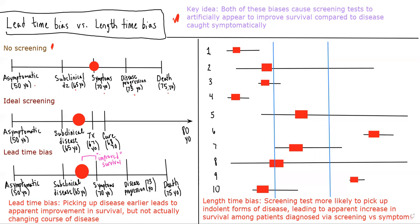Using this red circle as a marker, we see their disease would have been caught at age 70 when they had symptoms. Now in the ideal world with screening, the same patient is asymptomatic at 50, develops subclinical disease at 65, receives a screening test and has the disease picked up in the subclinical phase. He's able to get treatment and is cured at 68, and we see the person's living long past 80. So this is the ideal case for screening where it actually does improve survival because we're able to pick up subclinical disease and treat it before it gets more aggressive and starts to lead to symptoms and a lot of morbidity and mortality.